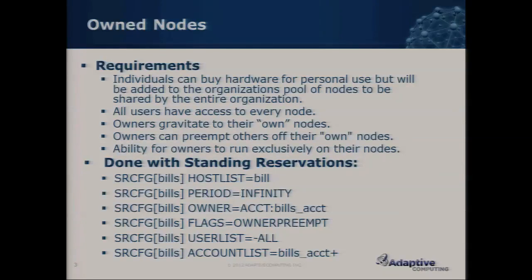We wanted to say that all users have access to these nodes, but we want them to avoid these nodes. There's a little dash — that's giving negative affinity to this reservation, so these jobs are going to avoid these nodes. We also want to give access to Bill's account and we want him to gravitate to these nodes, so we're going to give a plus for positive affinity. The user list represents everybody that's mapped to Bill's nodes, and this is defining the ACL — the access control list of the reservation.